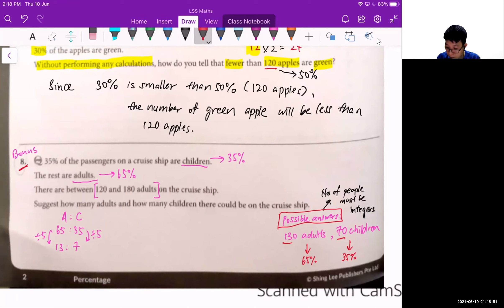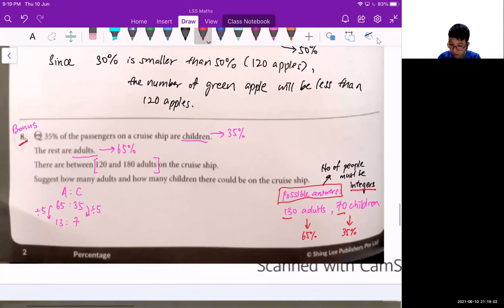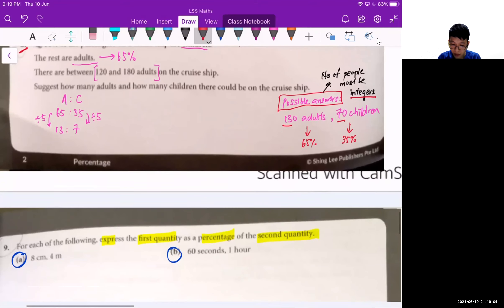So there are multiple answers for this question 8. As long as the number of people that you have found, for them must be integer, that means whole number.